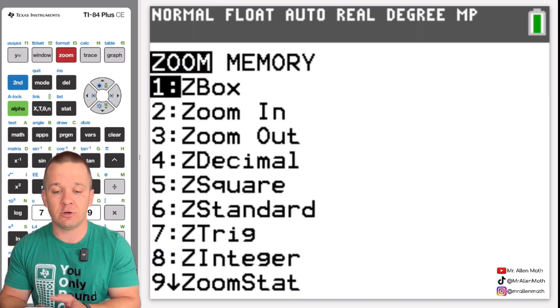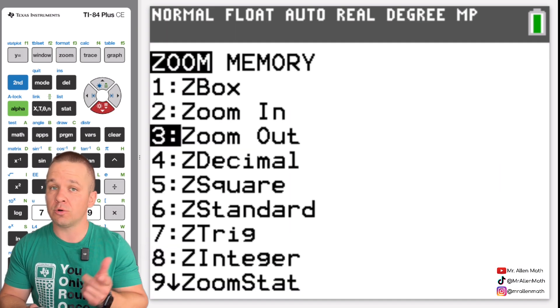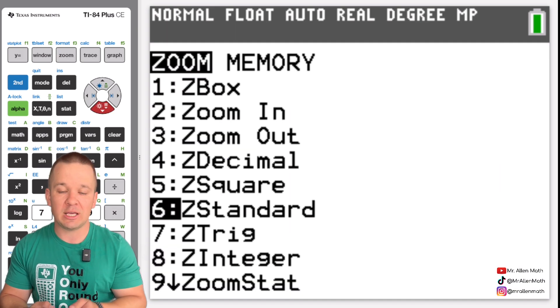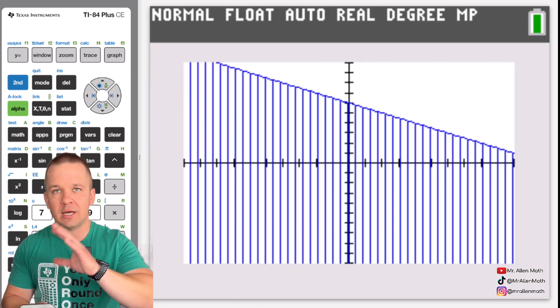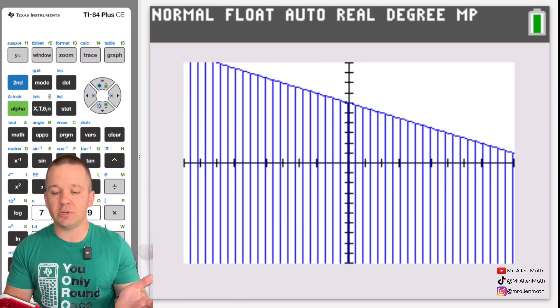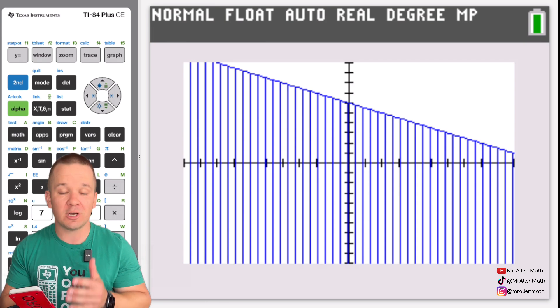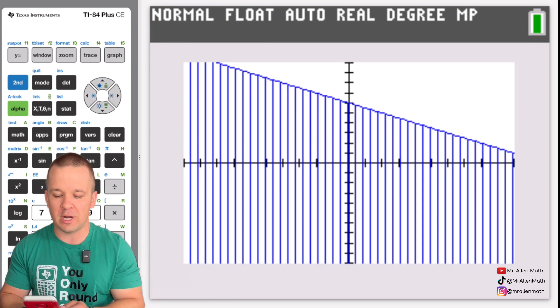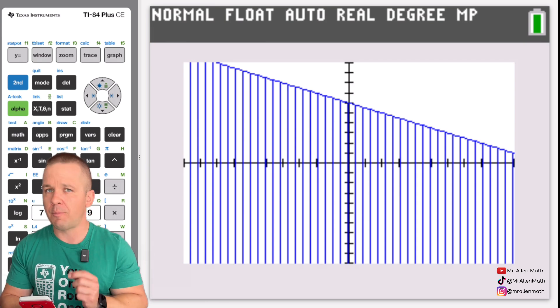Hit zoom and then if I go down to number six or just hit six on my keypad hit enter it'll put me into that 10 by 10 zoom window and we can see the shading here on these newer ones with the color screen. It's super super nice. Let's get a couple more going on here.